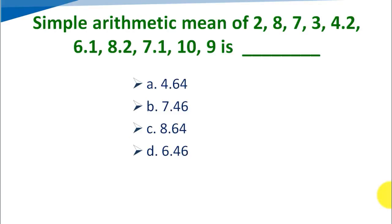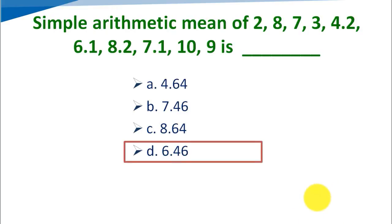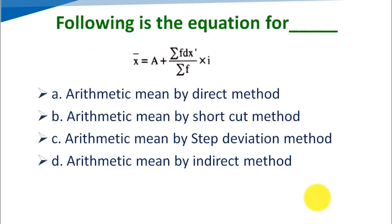Calculate the simple arithmetic mean of: 2, 8, 7, 3, 4.2, 6.1, 8.2, 7.1, 10, 9. Options: A) 4.64, B) 7.46, C) 8.64, D) 6.46. The correct answer is Option D, 6.46.